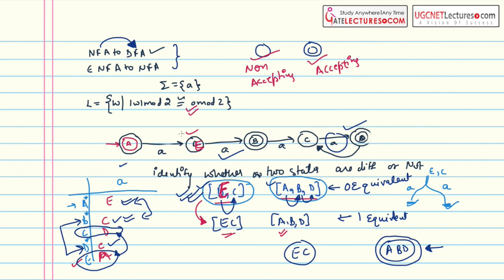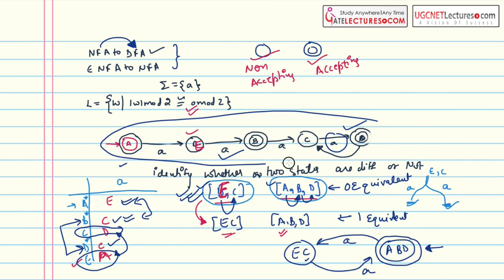If you give 'a' to any state in {a, b, d} you go to a state in {e, c}, and giving 'a' to any state in {e, c} leads to a state in {a, b, d}. So the complete diagram can be minimized to this smaller two-state diagram. I know this is not the best example, but I took it to explain what zero-equivalence, one-equivalence, and two-equivalence mean. I will take more examples to show the difference between one-equivalent, two-equivalent, three-equivalent states.